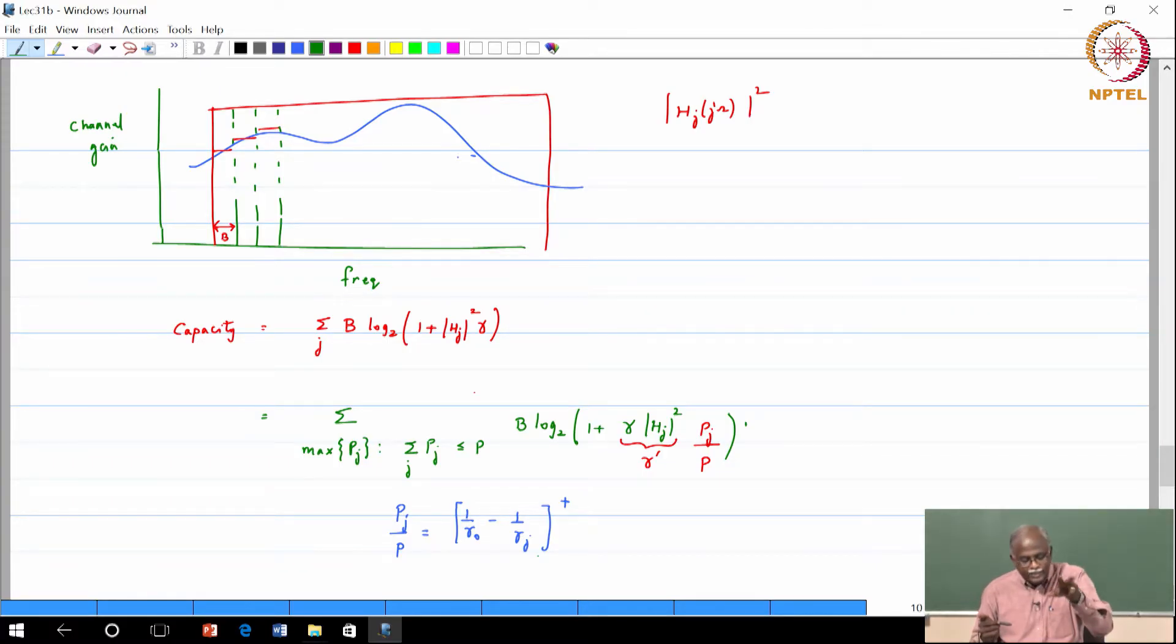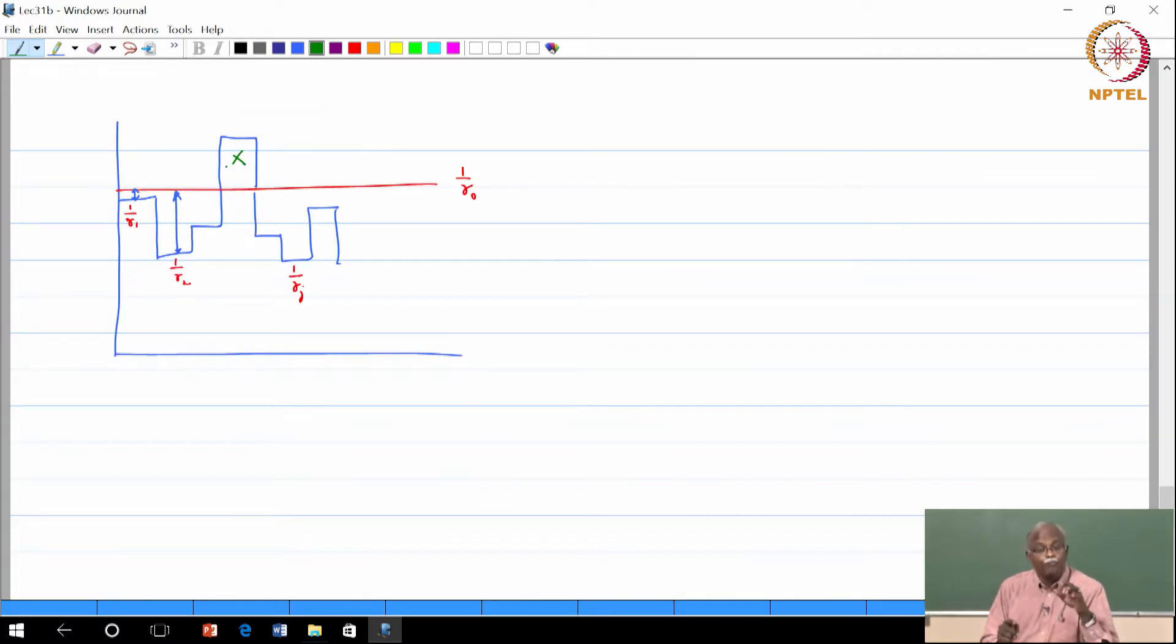However, if I split it into the sub bands, I not only can exclude certain portions from transmission, for the remaining part I can actually do optimum power allocation and get you the maximum capacity out of the system.